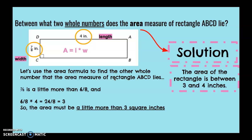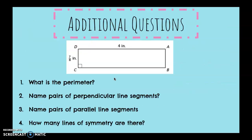So the solution is, the area of the rectangle is between 3 and 4 square inches. Additional questions: What is the perimeter? Name the pairs of perpendicular line segments. Name pairs of parallel line segments. How many lines of symmetry are there? Let's start with number one.